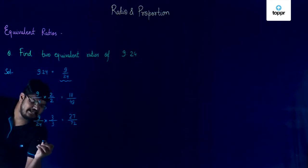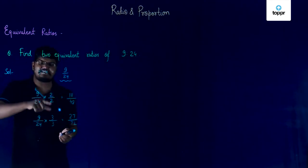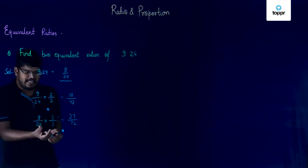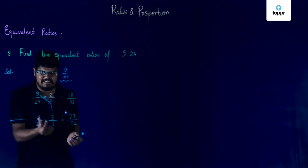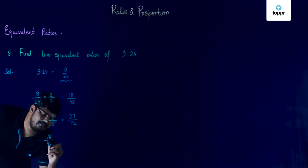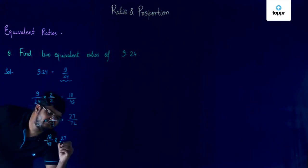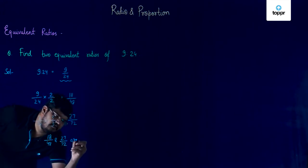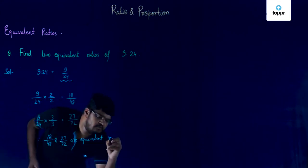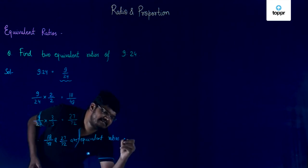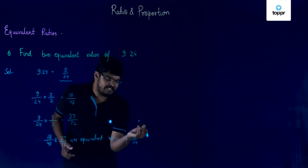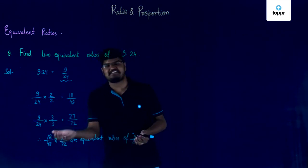Upon simplification this 2 and 2, since it's a common factor, will cancel each other and give us 9 by 24 again. Similarly this 3 and 3 will cancel and give us 9 by 24 again. So 18 upon 48 and 27 upon 72 are equivalent ratios of 9 is to 24. Simply by multiplying the given ratio by a common number in its numerator and denominator, we can obtain such ratios.